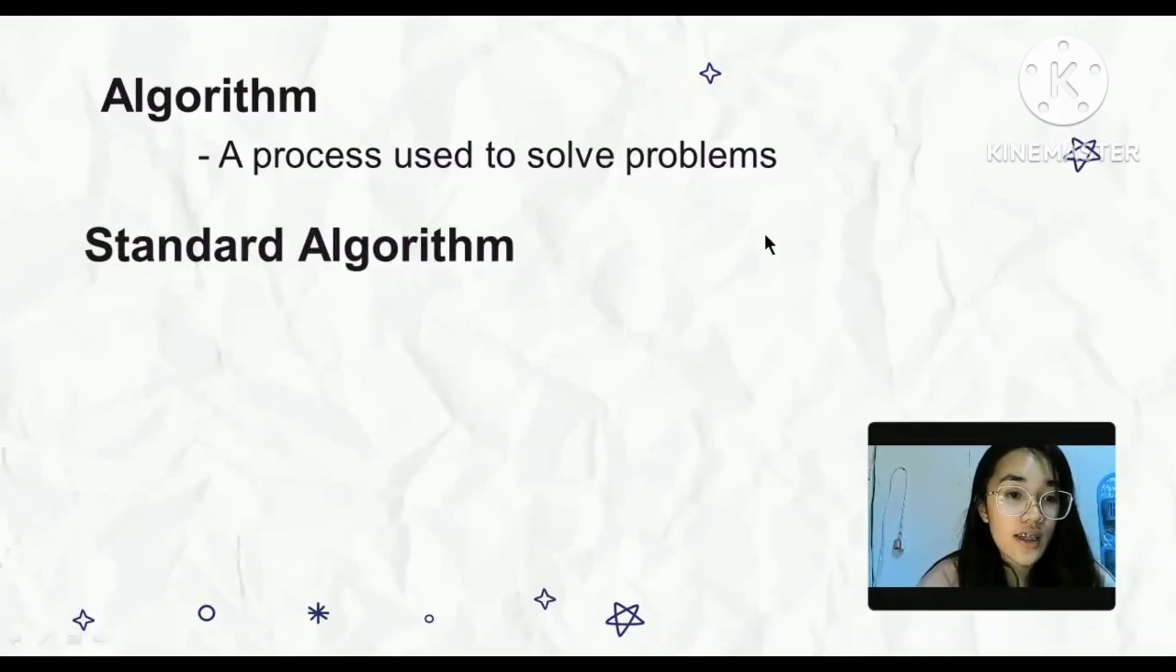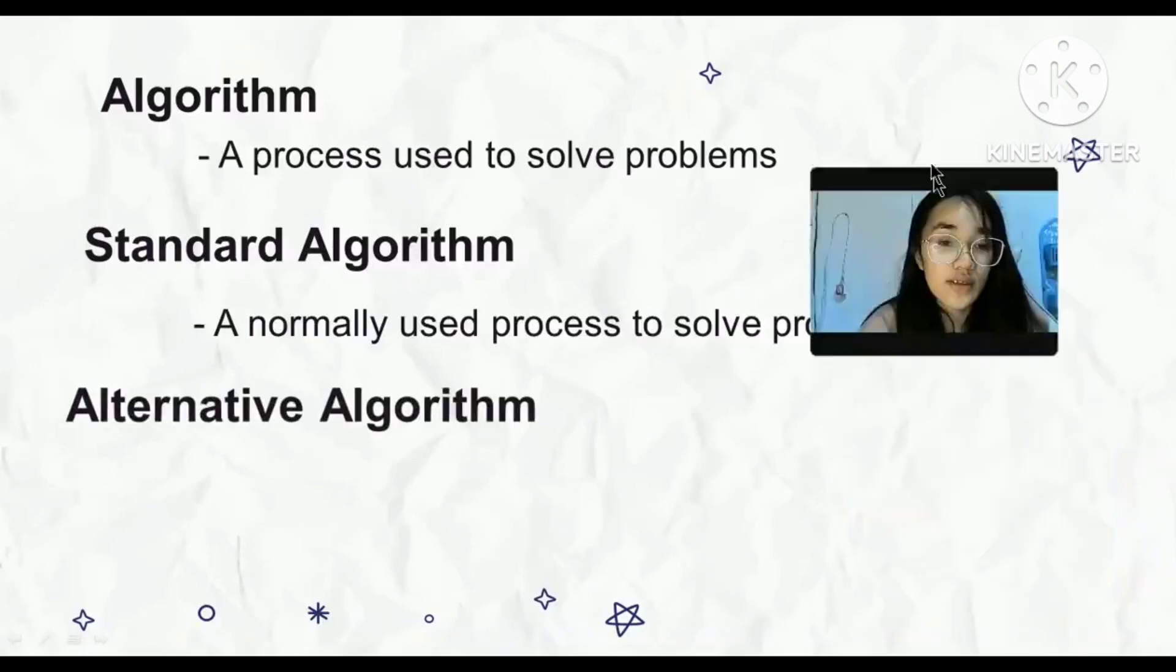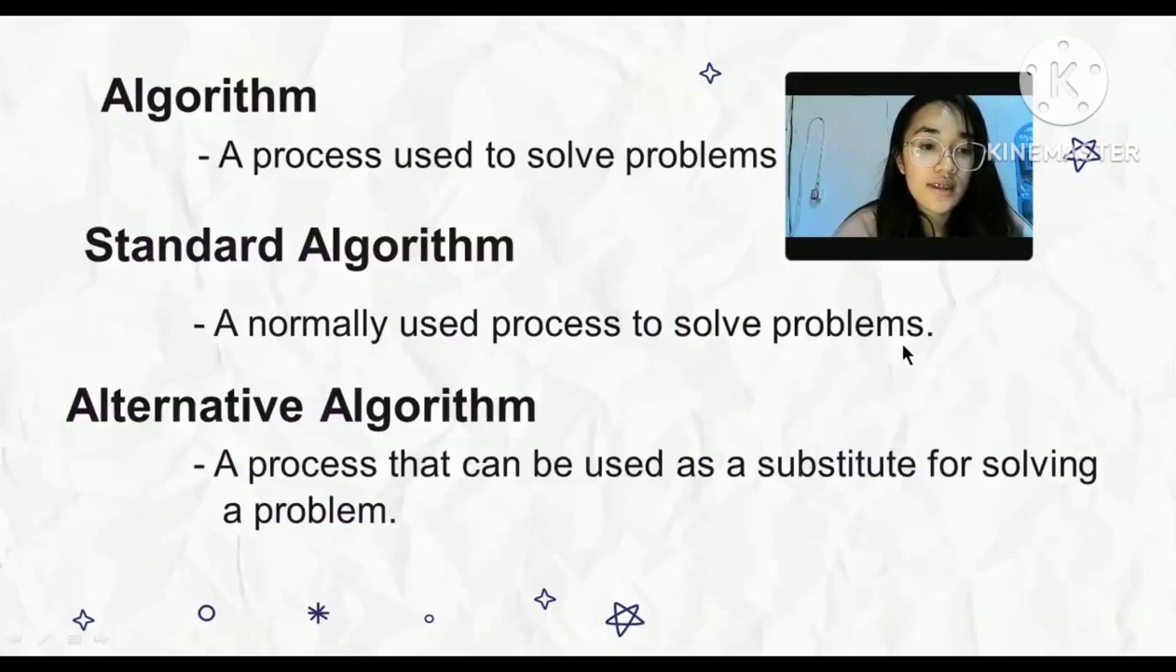And when we say standard algorithm, it is a normally used process to solve problems. And we have the alternative algorithm, which is the process that can be used as a substitute for solving a problem.